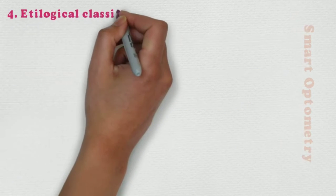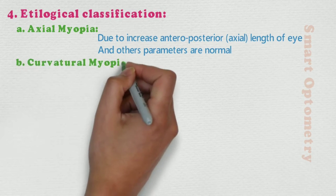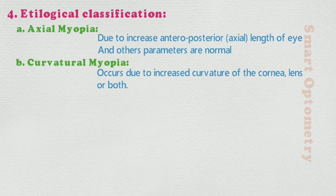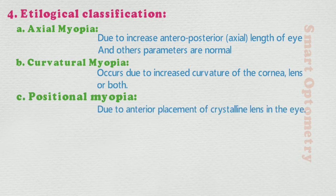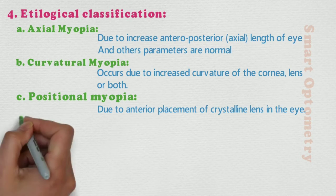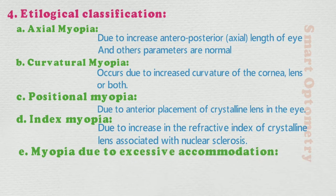4. Etiological classification. A. Axial myopia: increased anteroposterior or axial length of the eye, other parameters normal. B. Curvature myopia: increased curvature of cornea, lens, or both. C. Positional myopia: anterior placement of crystalline lens in the eye. D. Index myopia: increased refractive index of the crystalline lens associated with nuclear sclerosis. E. Myopia due to excessive accommodation: occurs in patients with spasm of accommodation.